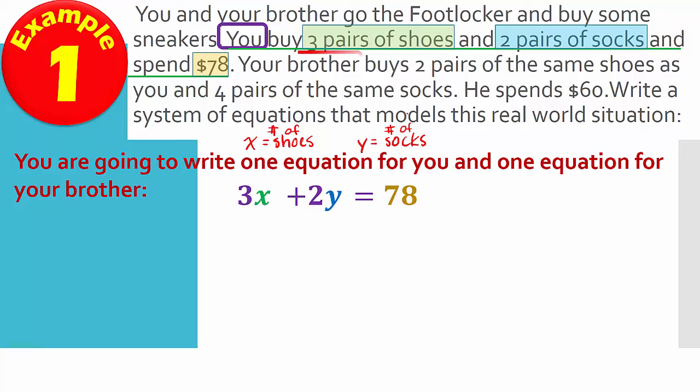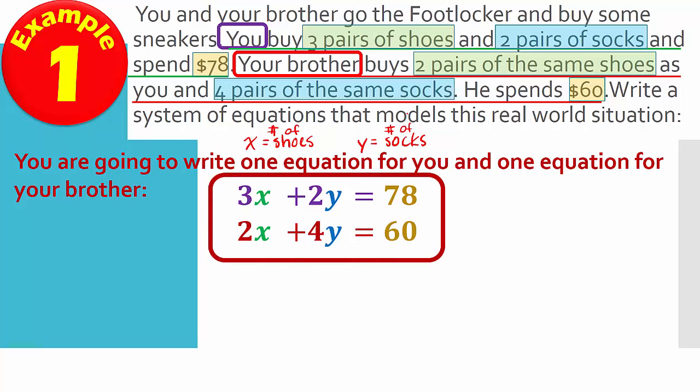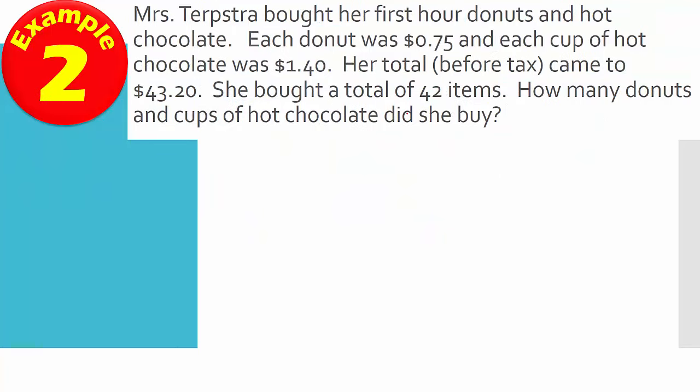We're going to do the same thing for your brother. So your brother buys two pairs of the same shoes as you and four pairs of the same socks and spends $60. So two pairs of shoes. So this is going to be 2x because two pairs of shoes and x is the number of shoes, four pairs of socks. So the four in front of the y. And that equals $60. And that's all you have to do is just write those two equations out. They're going to be changing up as far as it's not going to be necessarily that easy every time. You're going to have to do a little bit of thinking. So we'll go ahead to the second example.